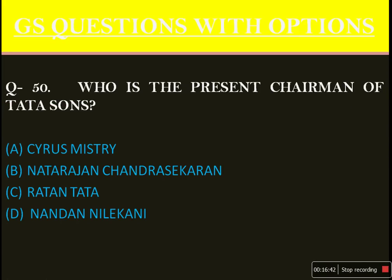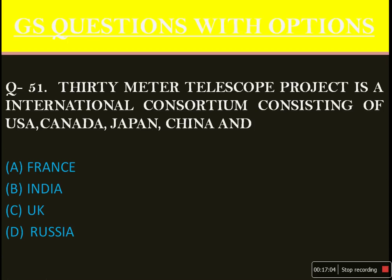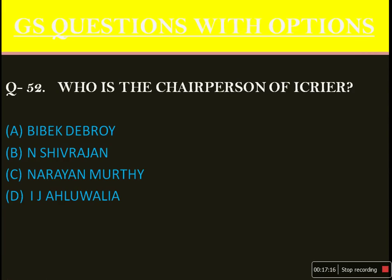Who is the present chairman of Tata Sons? Many at the examination centre were from TCS, so for them it was a cakewalk. The answer is option B: Natarajan Chandrasekaran. The 30-meter telescope project is an international consortium consisting of USA, Canada, Japan, China, and — option B — India. We are part of this consortium. Who is the chairperson of ICRIER? The answer is option D: I.J. Ahluwalia (Isher Judge Ahluwalia).